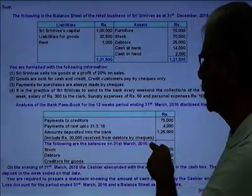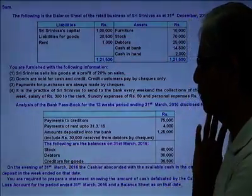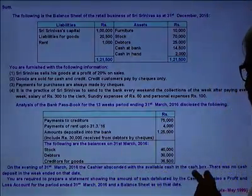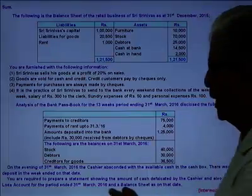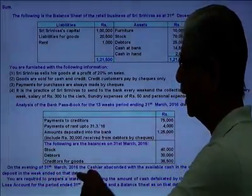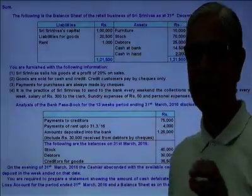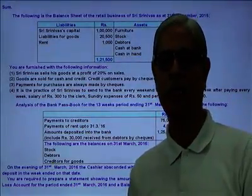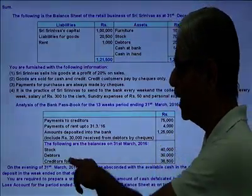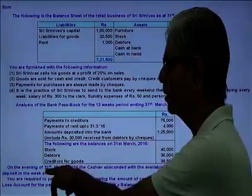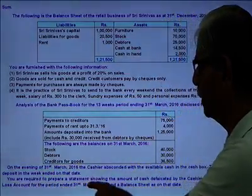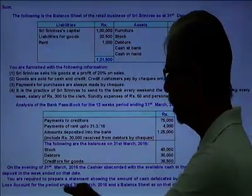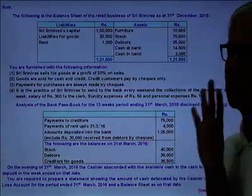The following are the balances as on 31st March 2016: stock, debtors, and creditors for goods. On the evening of 31st March 2016, the cashier absconded with the available cash in the cash box, and there was no cash deposited at the week end of that date. We are required to find out the cash balance as on 31st March 2016 — the amount of cash defalcated by the cashier — and also prepare a profit and loss account for the period ended 31st March 2016 and the balance sheet as on that date.